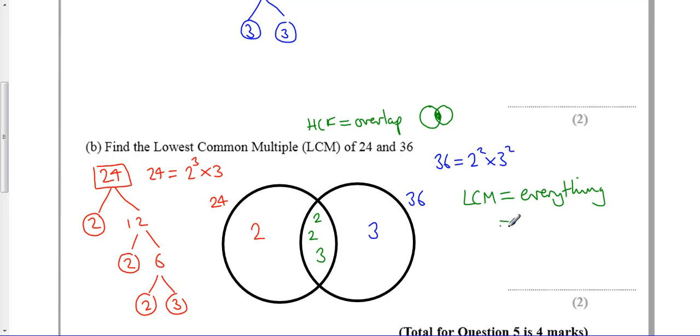I need to do 2 times 2 times 2 times 3 times 3 - everything in my diagram. I'm going to start from 3 times 3, which is 9. Double it: 18. Double it: 36. Double it: 72. So the LCM, the lowest common multiple, the lowest number that 24 and 36 go into, is 72.